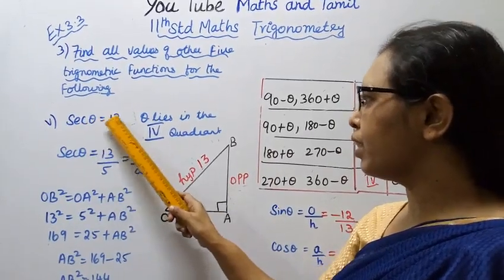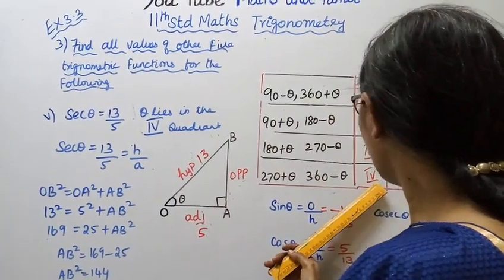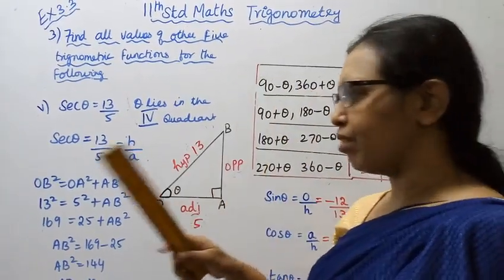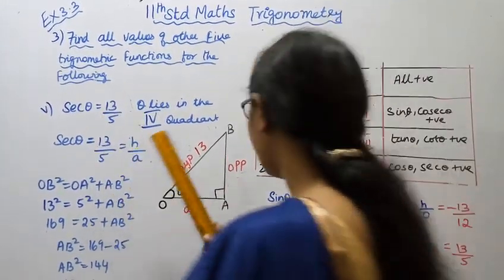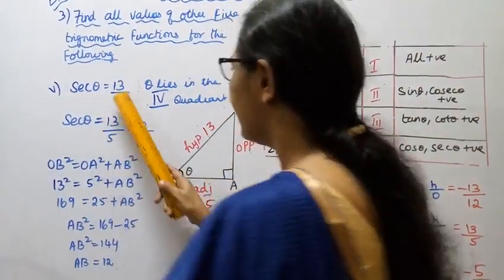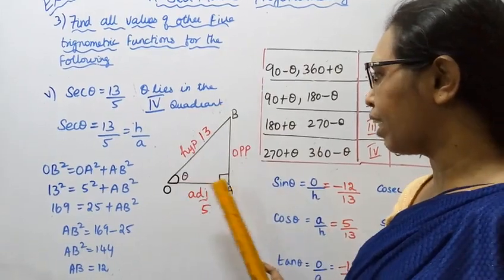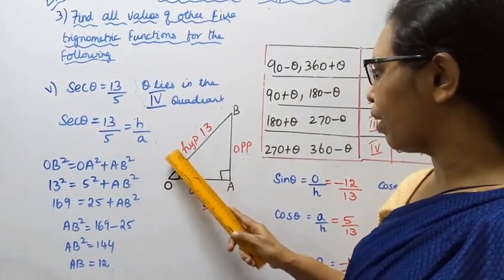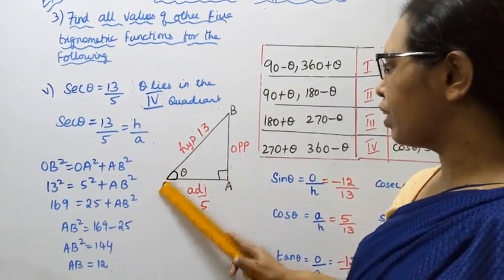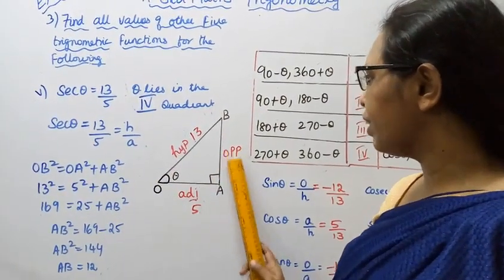Fifth sub-division: secant theta equals 13 by 5, theta lies in the fourth quadrant. In the fourth quadrant, cos and secant are positive. Secant theta equals hypotenuse by adjacent, so hypotenuse equals 13 and adjacent equals 5. Using OB squared equals OA squared plus AB squared: 13 squared equals 5 squared plus AB squared.